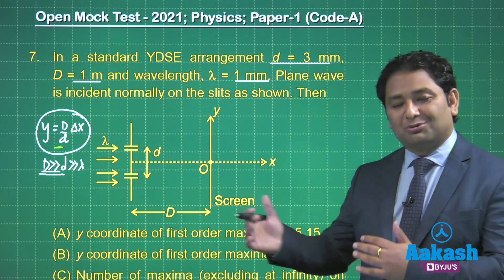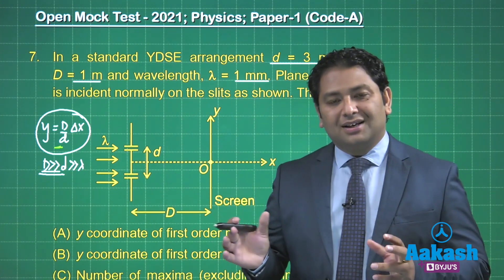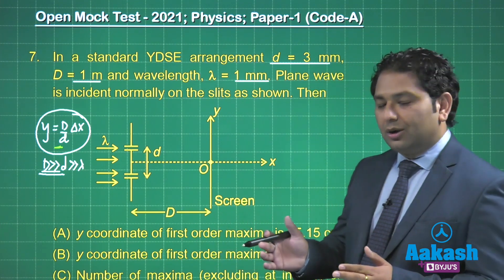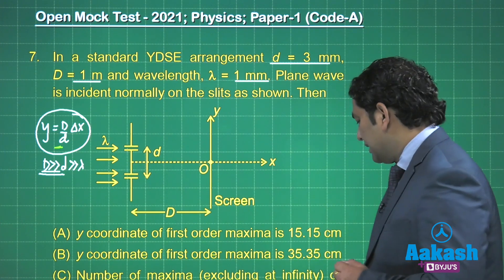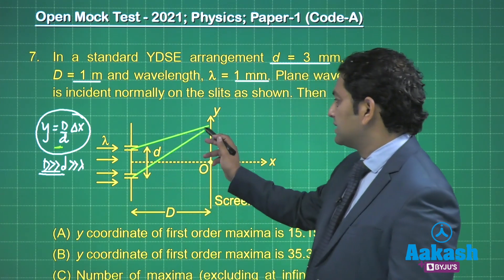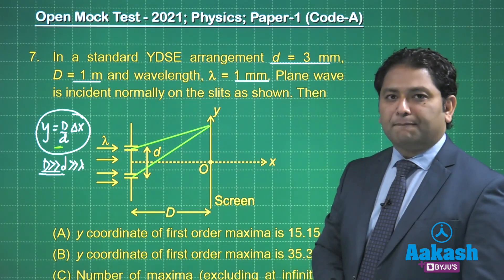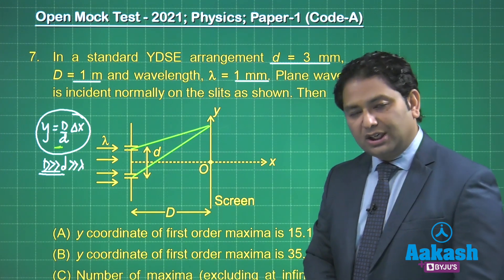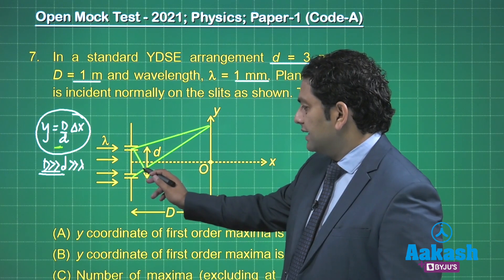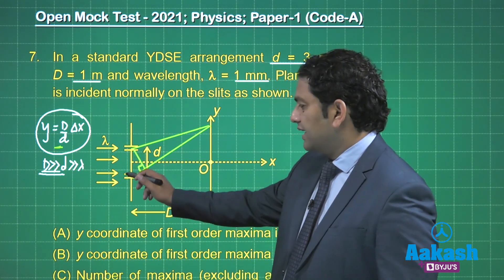We need to go back to basics. This is a typical variety of JEE Advanced question where the change in conditions are given, and the options are calculated in such a way that you have a tendency to use the standard formula. Now, to find the first maxima, the characteristic is that the path difference equals one lambda. Since capital D is much much greater than small d, the path difference can be suitably calculated by dropping a perpendicular.